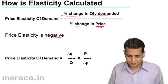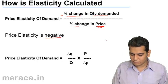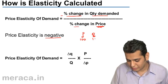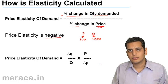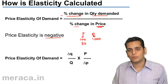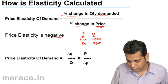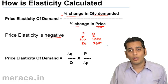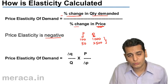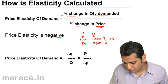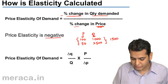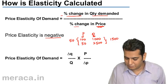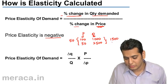Let's take an example. When the price is 100 rupees, the quantity demanded is 1000 units. Then the price falls to 50 rupees and the quantity demanded rises to 2500 units. The change in quantity demanded is 2500 minus 1000, that is 1500 units. The change in price is 50 rupees.